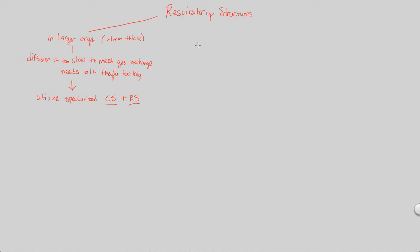Generally speaking, respiratory structures will all have the following characteristics, and that's what makes them fall under these overall descriptions. In order to describe a respiratory structure, you need to understand that any respiratory structure — however advanced or simple — is going to be adapted for gas exchange. That's its number one job.